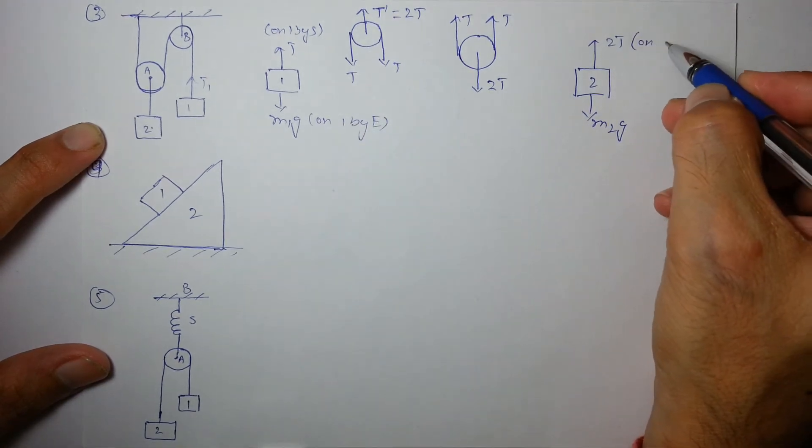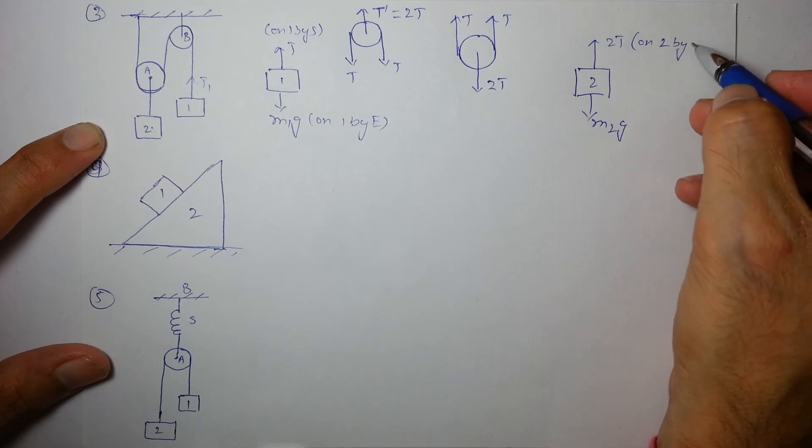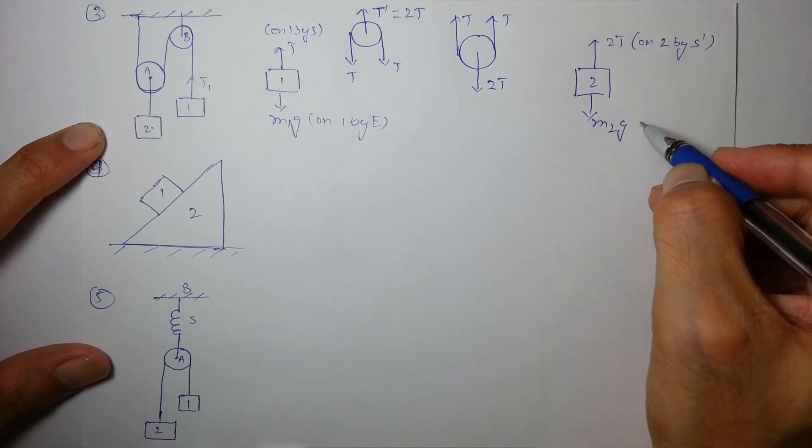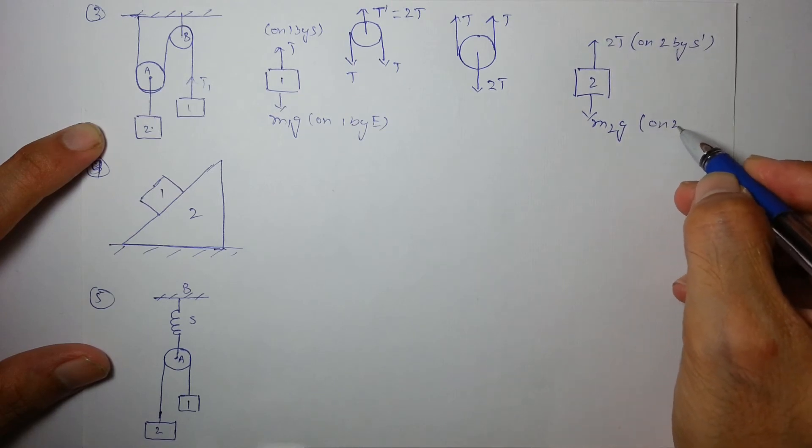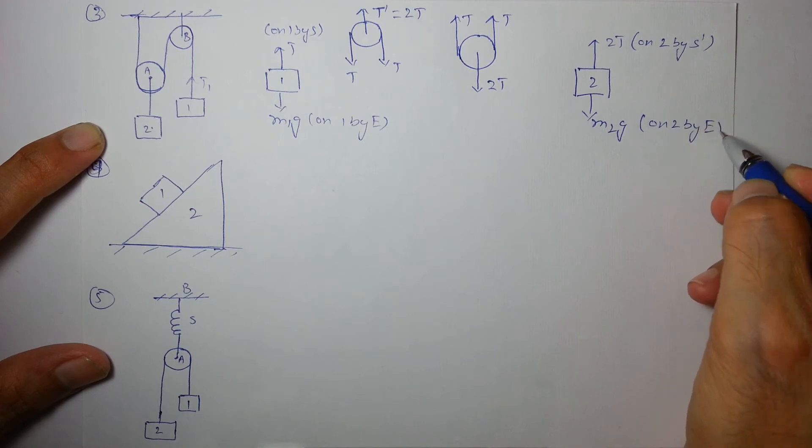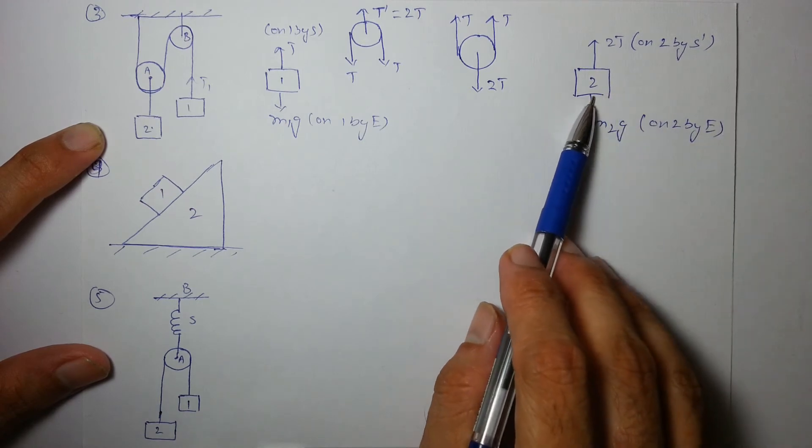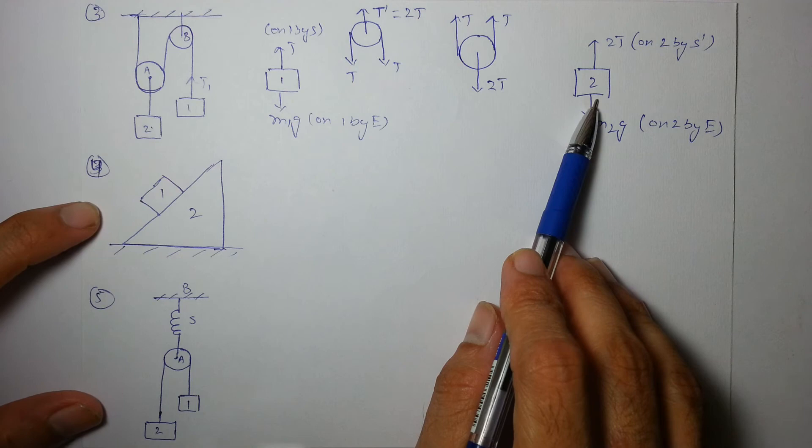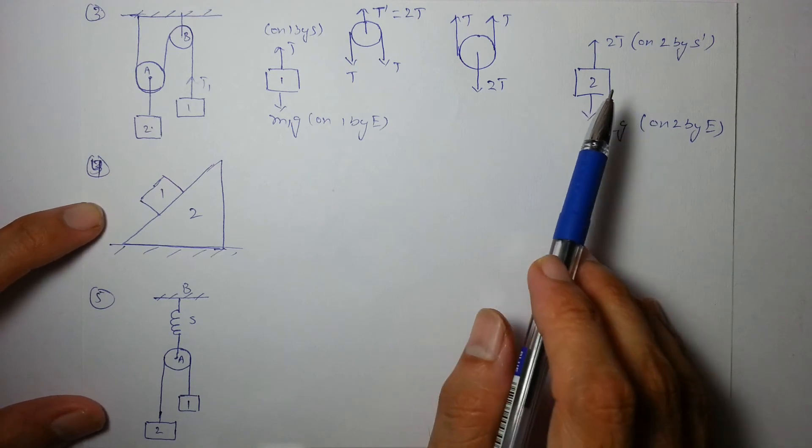This is on two by string, this is on two by earth. So in FBD of two, we'll show only those forces which are acting on two.